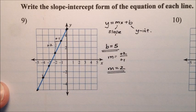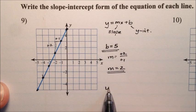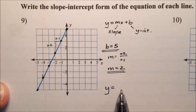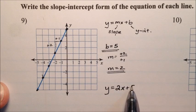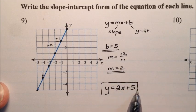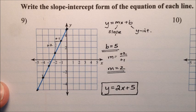Now we have both pieces of information: b, which is our y-intercept, and m, which is our slope. So we can write the equation: y equals 2, which is our slope, times x, plus 5, which is our y-intercept. Right there is the answer to number 9 — the slope-intercept form of the equation, y = 2x + 5.